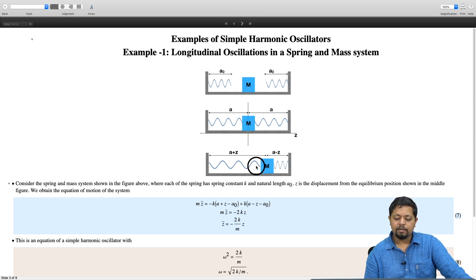That is its current length minus its natural length. The current length of the spring is a plus z minus the natural length that is a naught. Force is to the left, so minus k times the spring constant. So minus k times (a plus z minus a naught).